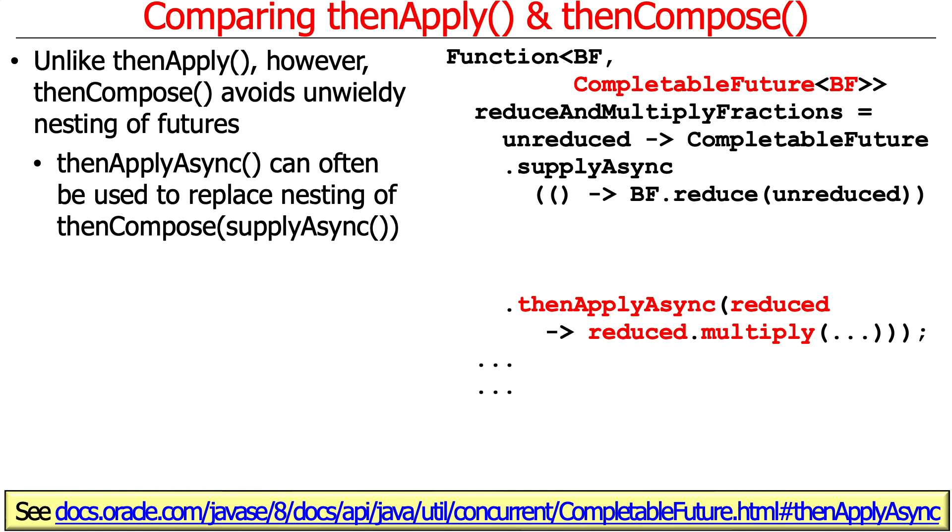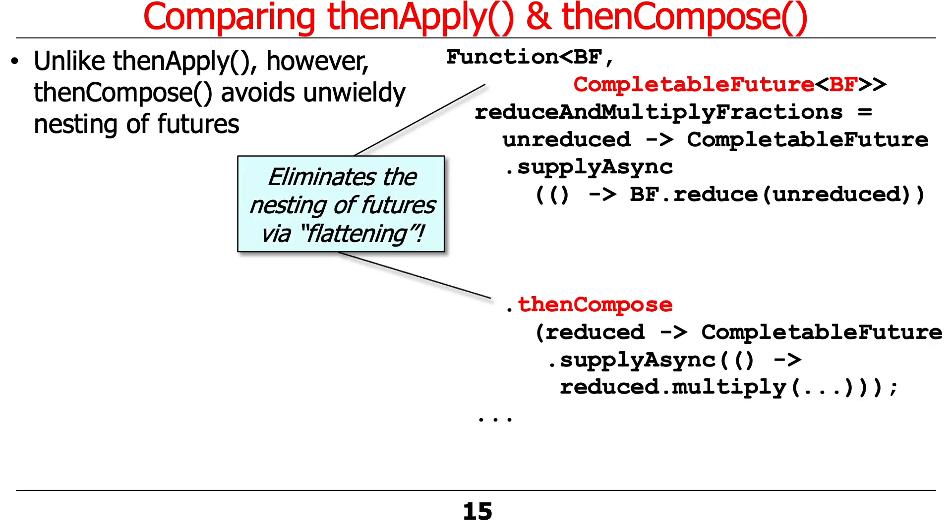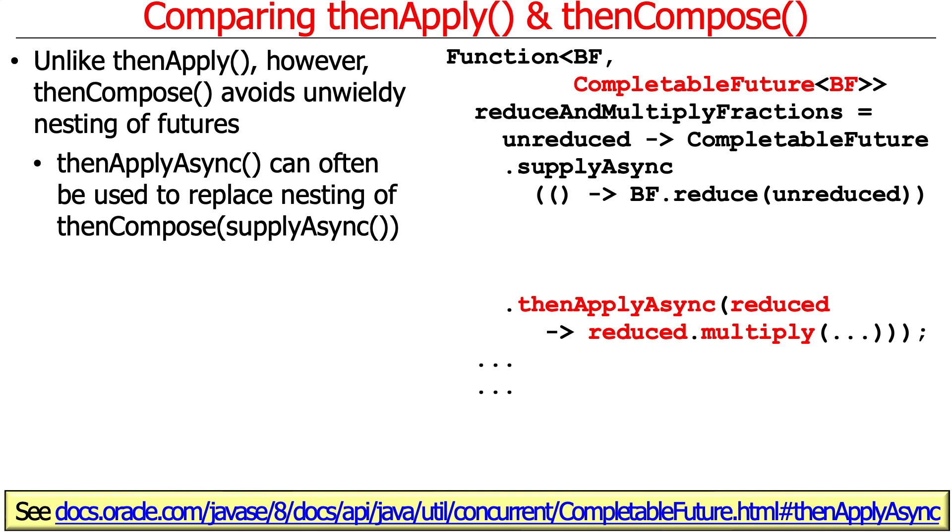Here's another little thing to be aware of, and this is even more cool, and you will definitely get a chance to use this in several places in your assignment number four. You can use thenApplyAsync to replace nestings of thenCompose and supplyAsync. So notice over here, we use thenCompose and supplyAsync to asynchronously do the multiplication in the background, and that worked because we denested things, which was nice. However, an even cleaner way to do that kind of use case is to use thenApplyAsync, which will take this action, which is going to multiply the reduced BigFraction by some value, some constant, and do that in the background.